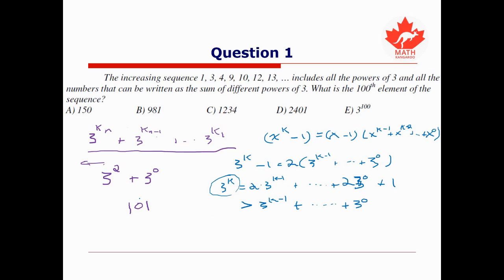The point is that as these binary strings increase, the corresponding terms of the sequence also increase. So to find the 100th element of the sequence, we only need to find the 100th element of increasing binary digits — in other words, this is the same as representing the number 100 in base 2.